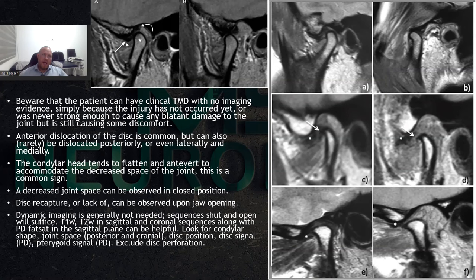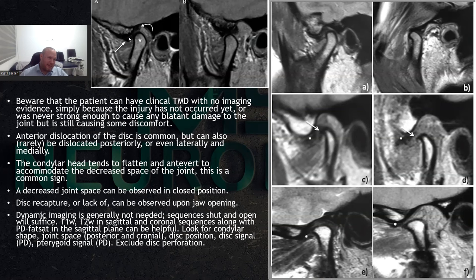On the left side, we have a fairly normal disc — it's a little bit too far forward, it should cover a little bit more of the apex of the condyle, but it's more or less normal. There's no thickening, no increased signal, and we have a fairly normal shape of the head of the mandible. We also see a normal joint space, and when the patient opens their mouth, there's normal positioning of the disc on top of the condyle.